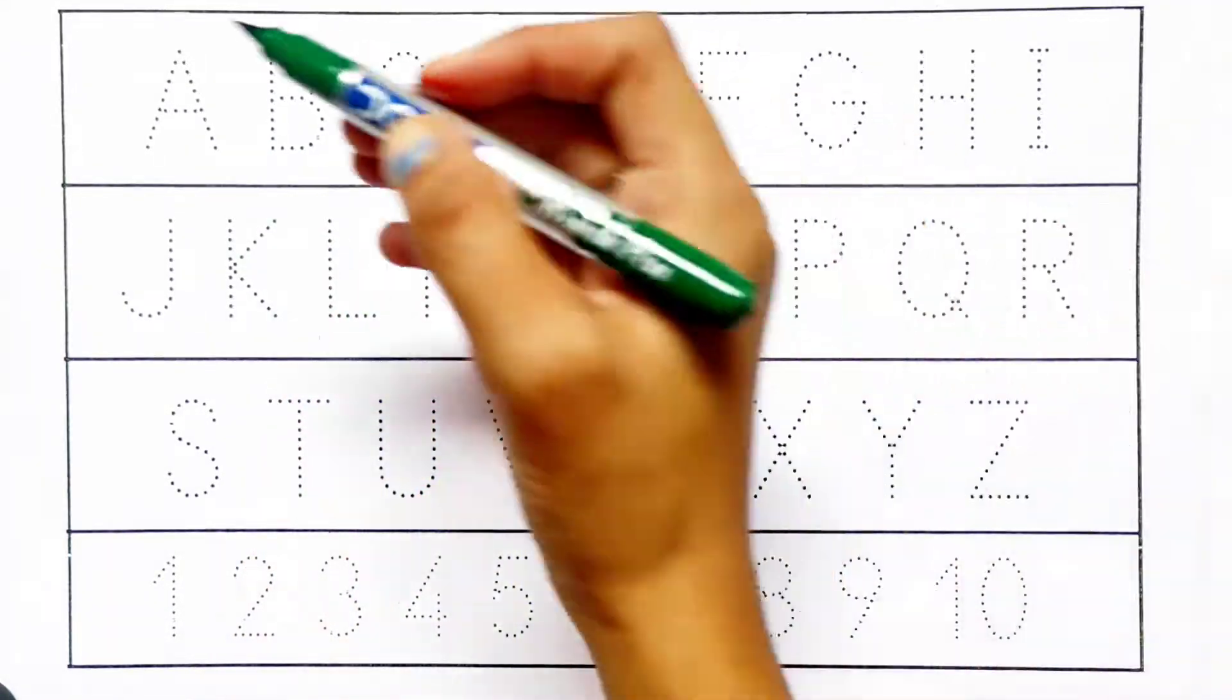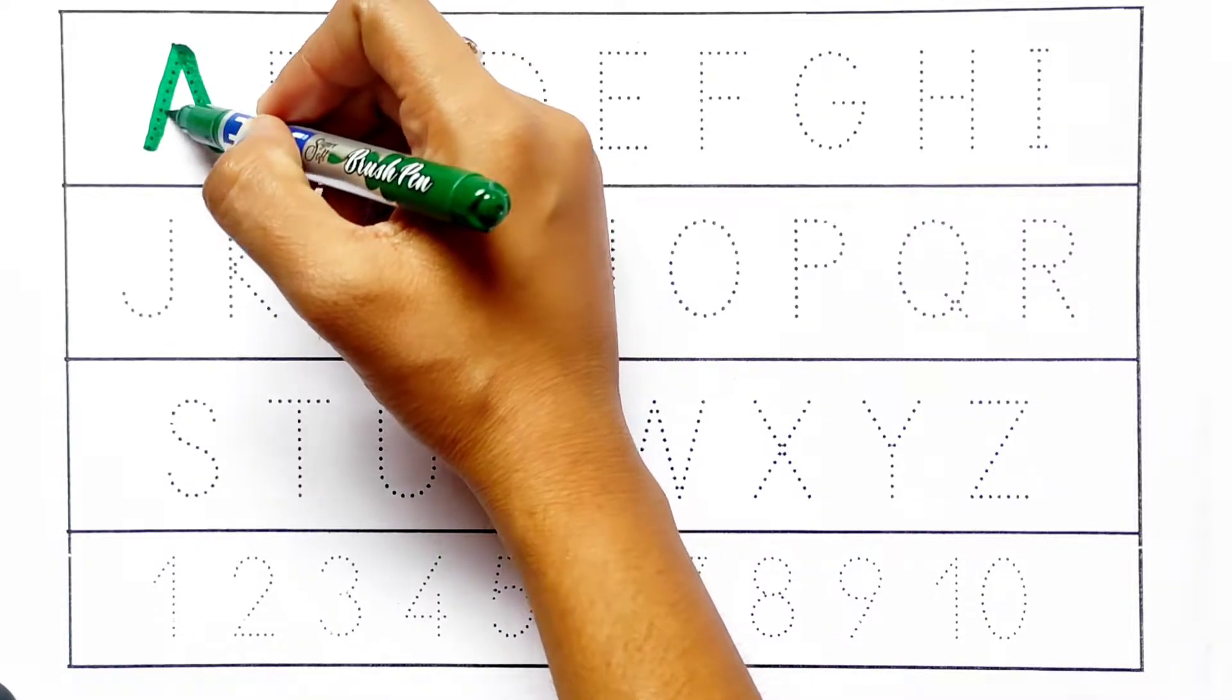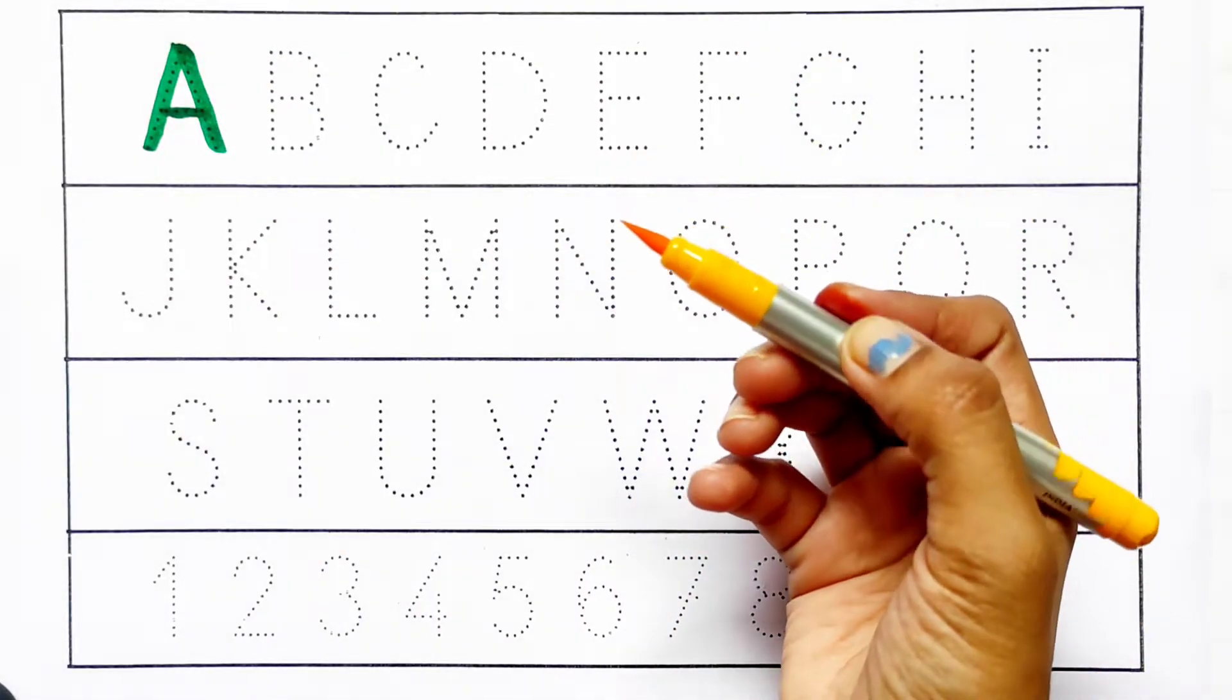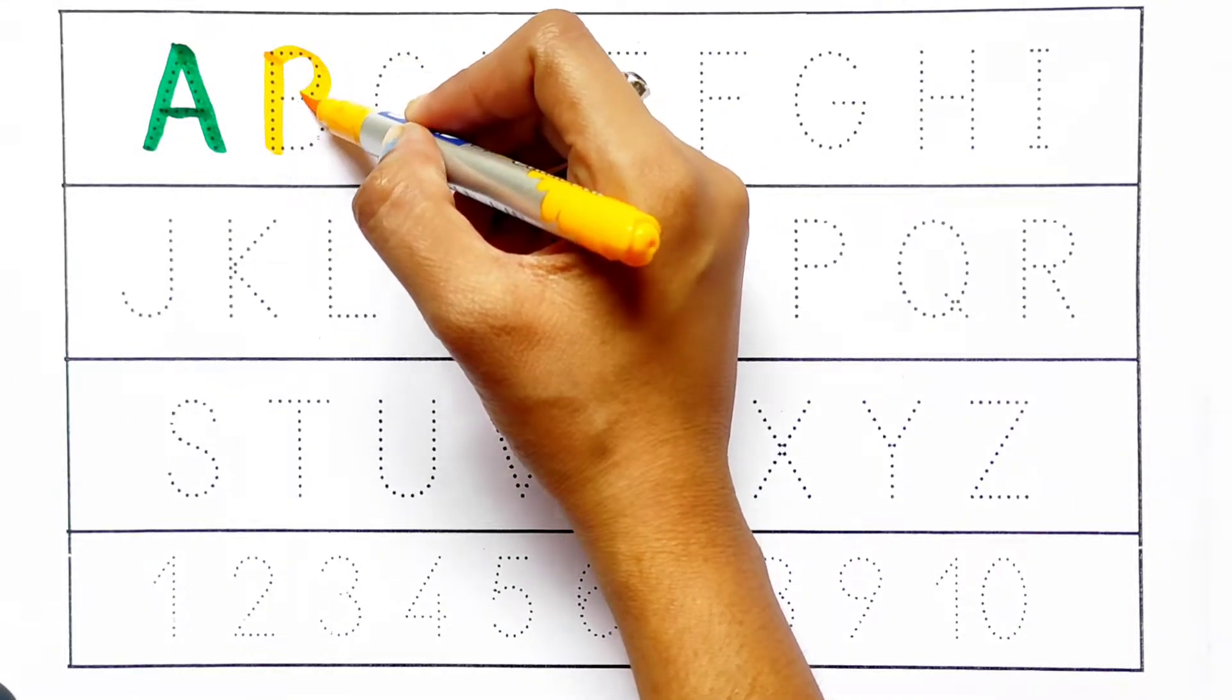Green color. A. A for apple. Yellow color. B. B for ball.